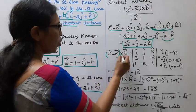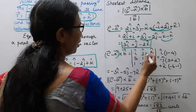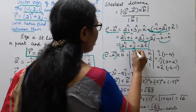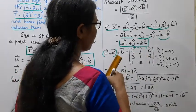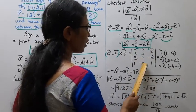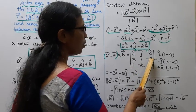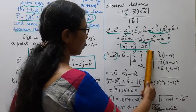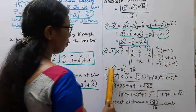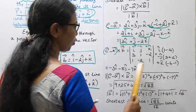Now computing (c vector minus a vector) cross b vector using the determinant with i-cap, j-cap, k-cap. c vector minus a vector components: 3, 1, minus 2. b vector components: 1, minus 2, 1. Expanding: i-cap(1×1 minus (minus2)(minus2)) minus j-cap(3×1 minus 1×(minus2)) plus k-cap(3×(minus2) minus 1×1). This gives: minus 3 i-cap minus 5 j-cap minus 7 k-cap.